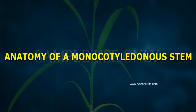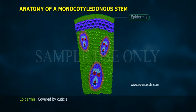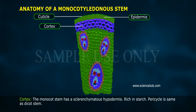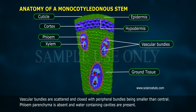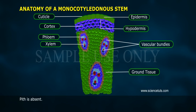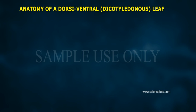Anatomy of a monocotyledonous stem. The epidermis is covered by cuticle. The monocot stem has a sclerenchymatous hypodermis rich in starch. The pericycle is the same as in the dicot stem. Vascular bundles are scattered and closed, with peripheral bundles being smaller than central ones. Phloem parenchyma is absent and water-containing cavities are present.